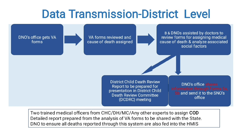The district child death review report is processed for presentation in the District Child Death Review Committee — DCDRC — meeting. The DNO's office shares information through Forms 5A and 5B and sends it to the state nodal officer's office. Trained medical officers from CHC, DHMC, and other experts assign cause of death. A detailed report is prepared from the analysis of verbal autopsy forms. DNO ensures all deaths reported through this system are also fed into the HMIS.